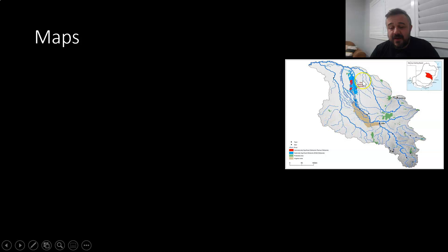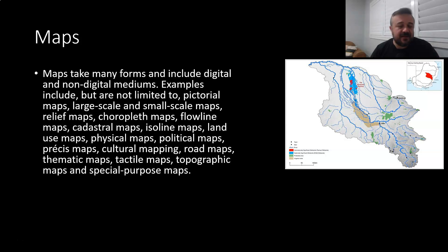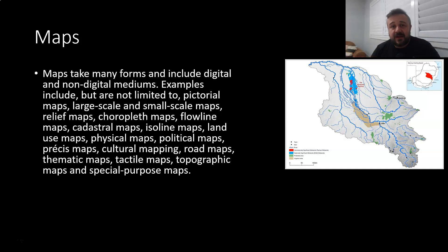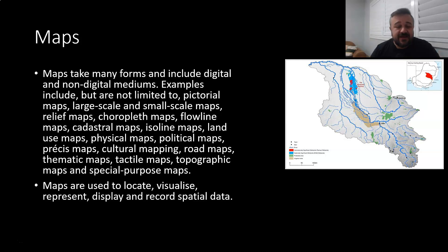Let's start with maps. Over here we have a map of the Macquarie River and how its water moves — that's a really useful and interesting thing. It's important to understand that maps can take many different forms. They can be paper maps, mud maps, or digital maps. We can have large-scale maps or small precise localized maps, maps of physical structures, political maps, topographic maps showing elevation, and we use them to locate, visualize, display, and record spatial data.